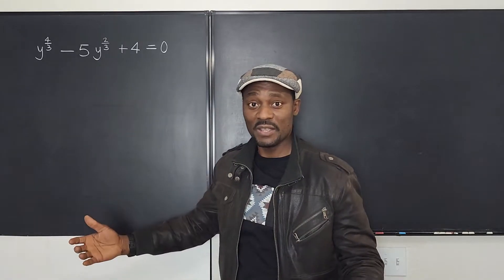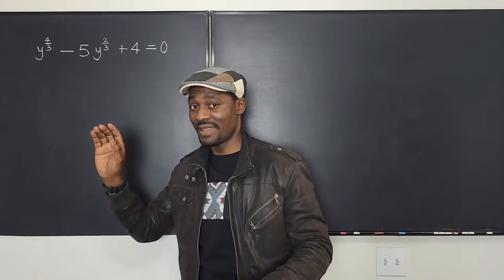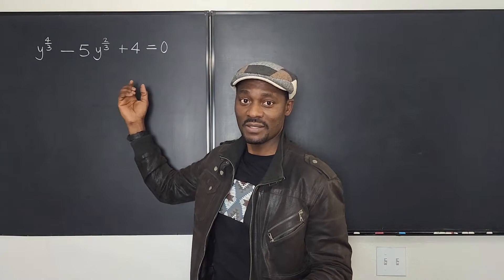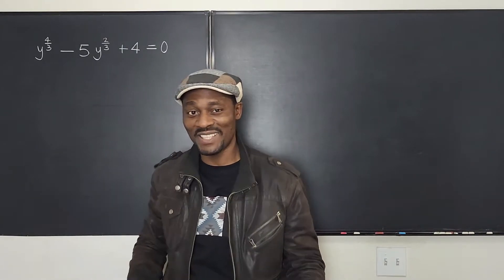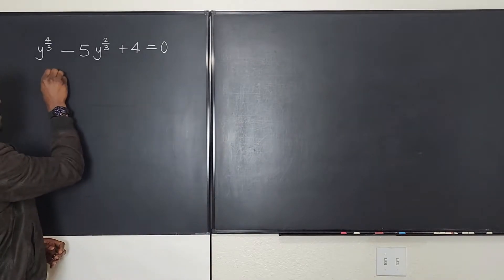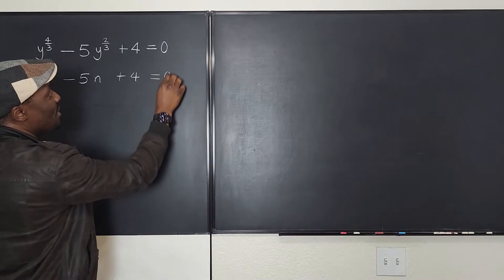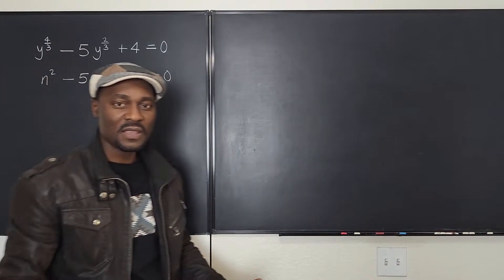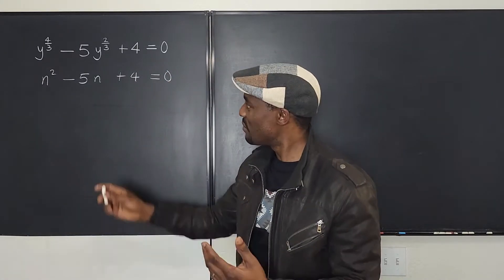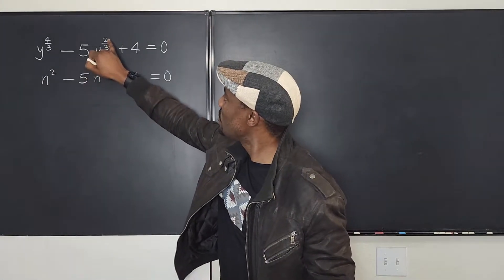In a quadratic equation, if you have x squared plus x plus something, which is a constant, equals zero, you would easily say that's a quadratic equation. Just imagine if I wrote this as n squared minus 5n plus 4 equals zero. You would agree with me that it is a quadratic equation. Well, it is a quadratic equation because what if I said that my n was y to the two-thirds?